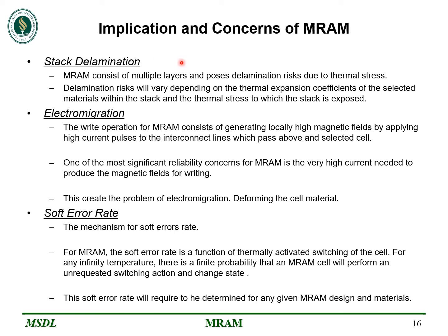The third implication is stacked layer delamination. MRAM consists of multiple layers, and multiple layers have multiple thermal expansion coefficients — they behave differently depending on their coefficient of expansion in the presence of higher temperature. As temperature keeps varying during read and write cycles, this can cause serious alteration of the MRAM structure. The fourth concern is electromigration. MRAM requires a very high magnetic field, requiring high current pulses. These high current pulses can produce electromigration, deforming the cell due to the different materials used in MRAM development.